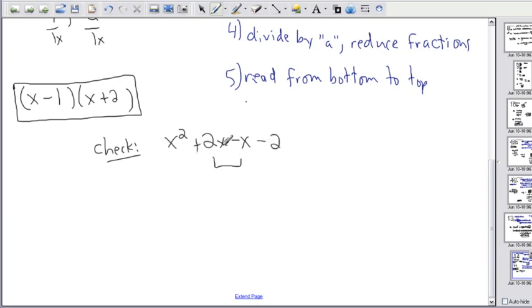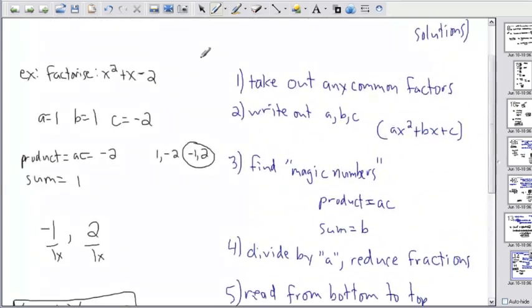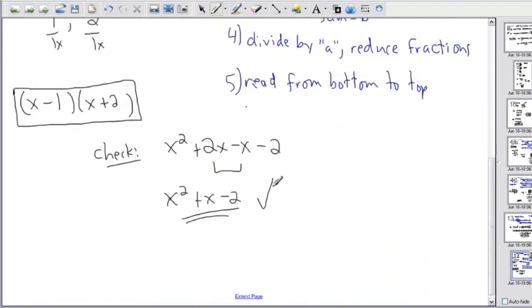And of course, I combine these two terms because they both have x's in them. I have x squared. 2x minus 1x is going to give me plus 1x minus 2. So is this really supposed to be x squared plus x minus 2? Yes. So that's how I know I did it right. You can always check if you did an answer right just by expanding it.